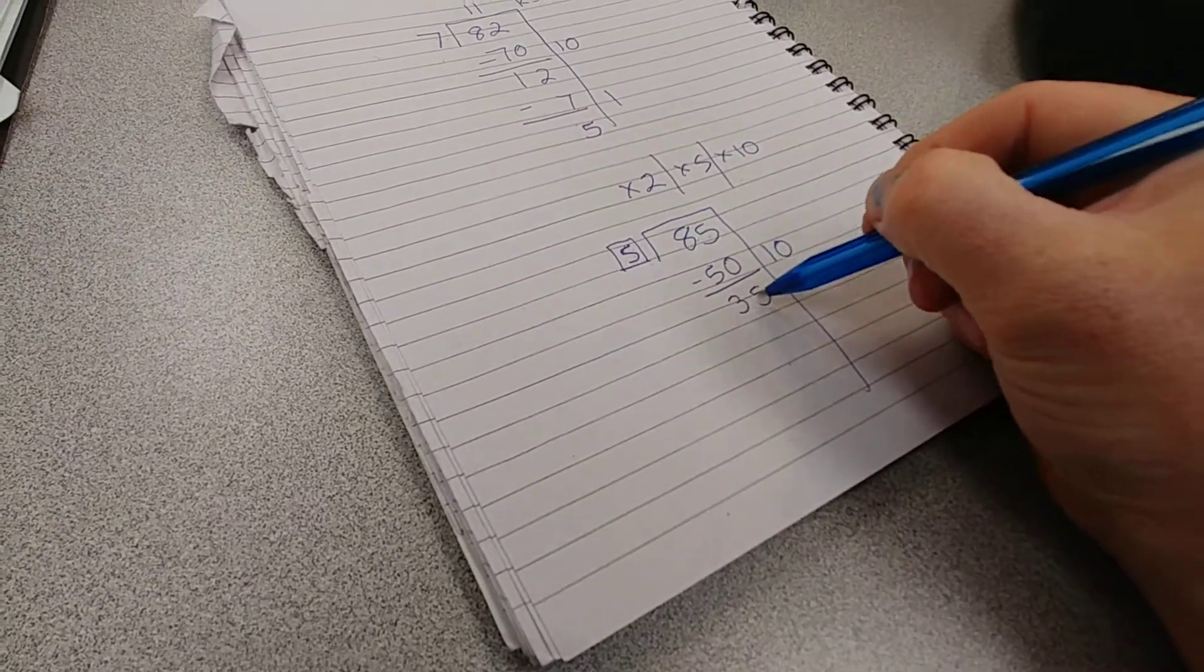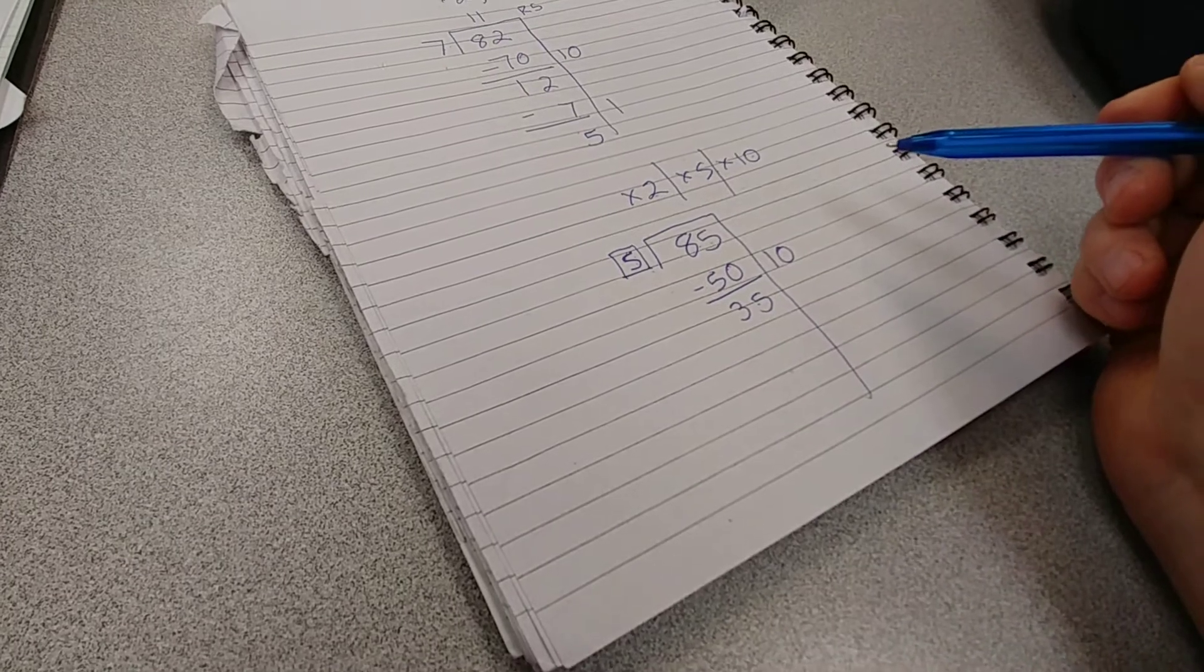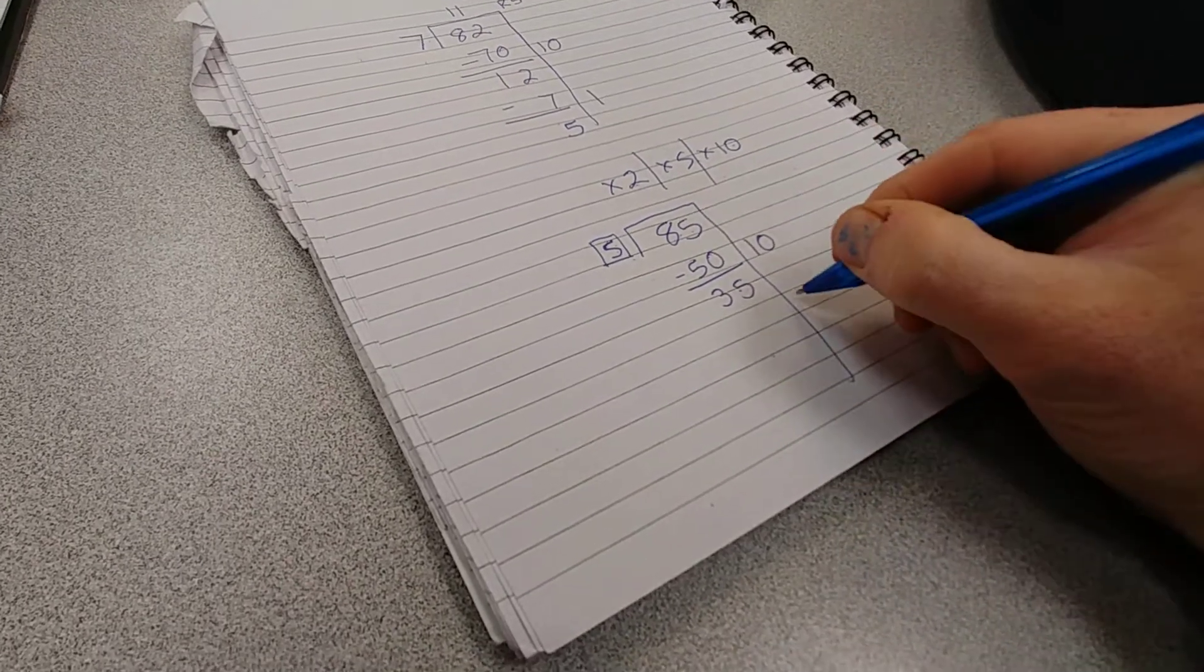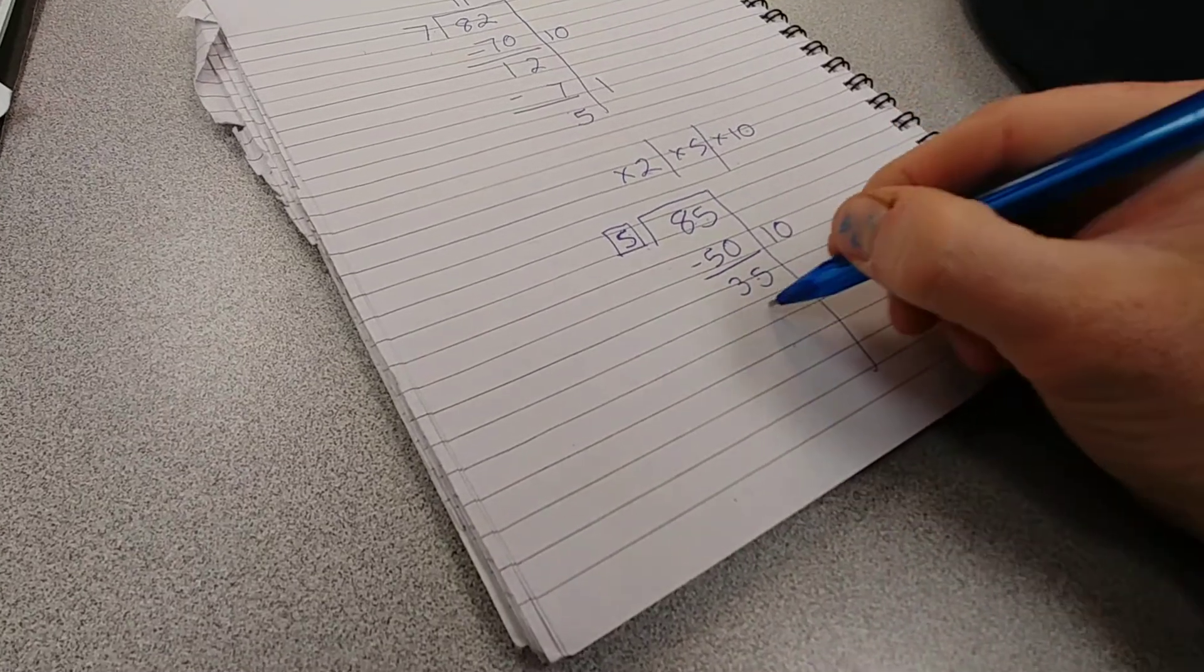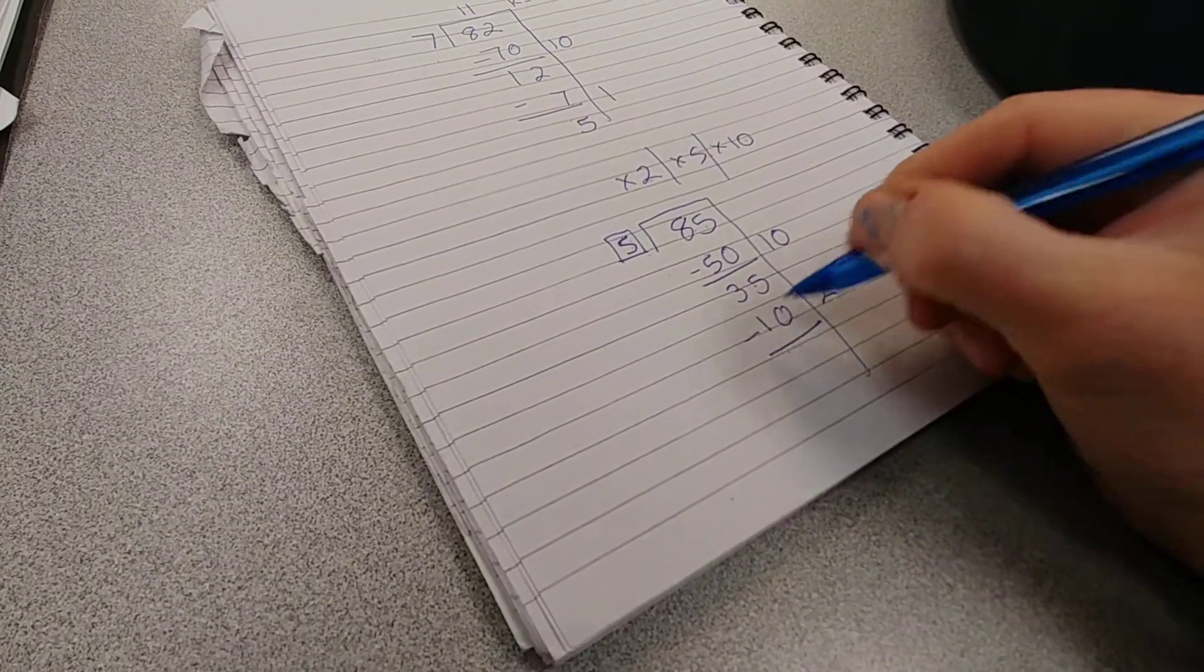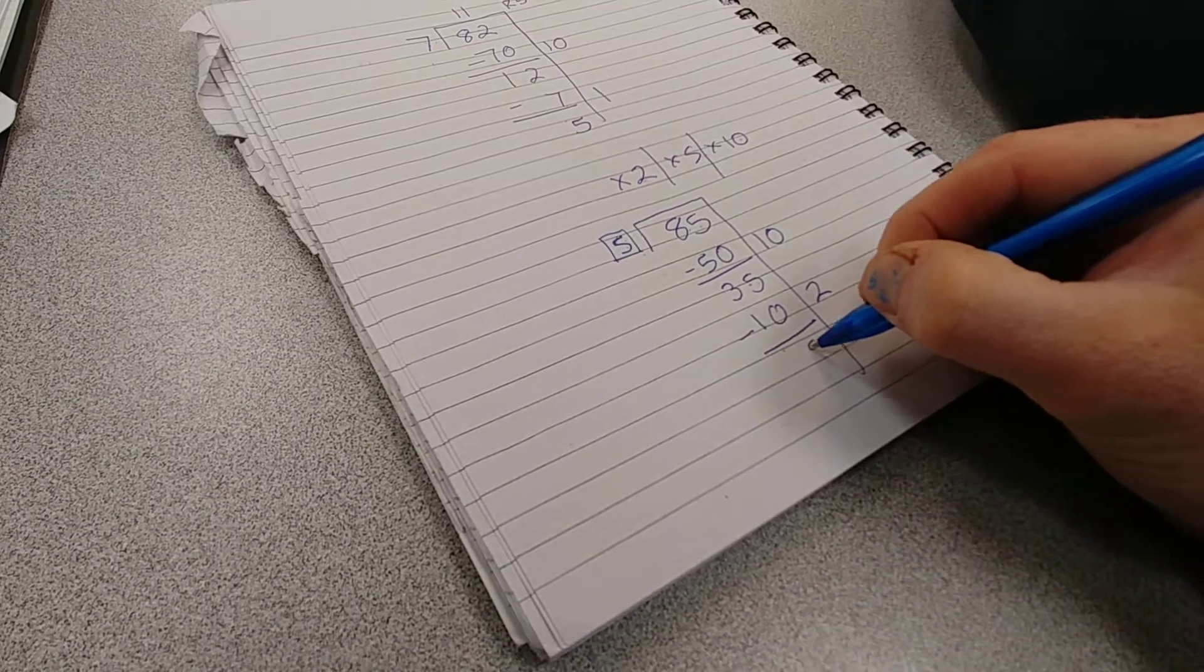Five into 35... two, five, or ten? Two. What's five times two? Ten. What's five minus zero? Five. What's three minus one? Two. Five into 25... two, five, or ten? Ten.